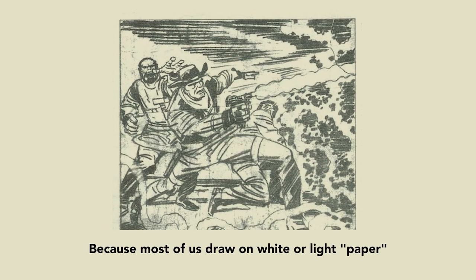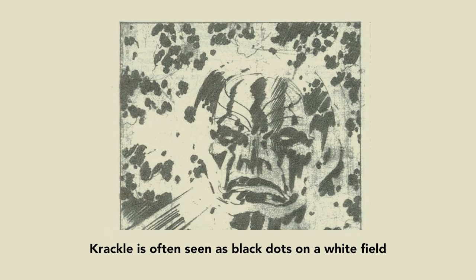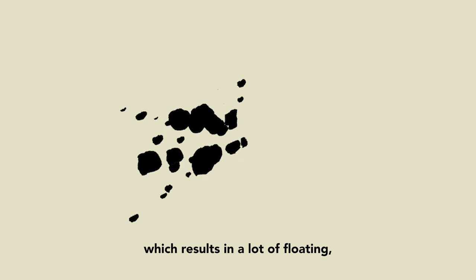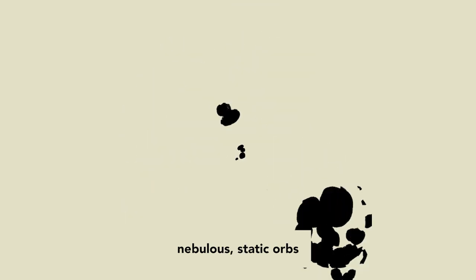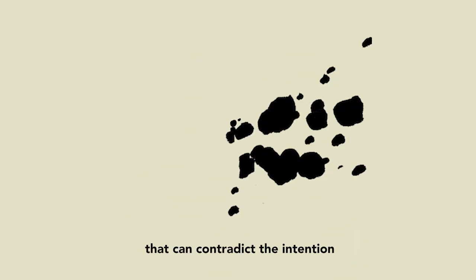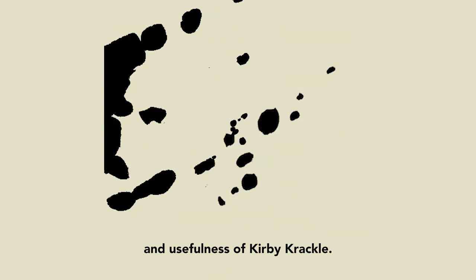Because most of us draw on white or light paper with a darker tool, Crackle is often seen as black dots on a white field, which results in a lot of floating nebulous static orbs that can contradict the intention and usefulness of Kirby Crackle.